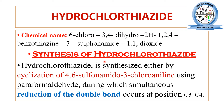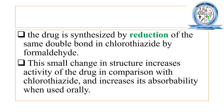There are different routes for synthesis of hydrochlorothiazide. One route involves cyclization of 4,6-sulfonamido 3-chloroaniline using paraformaldehyde, with simultaneous reduction of the double bond at carbon positions three and four. Another route is the reduction of the double bond in chlorothiazide using formaldehyde. Looking at chlorothiazide, the double bond is present at the third and fourth carbon, and converting it to hydrochlorothiazide involves reduction of that double bond.